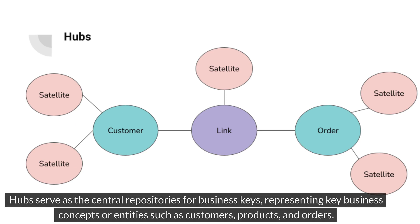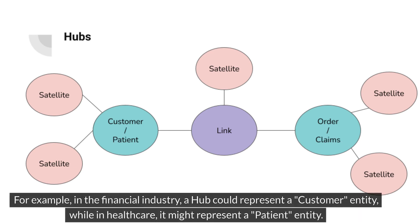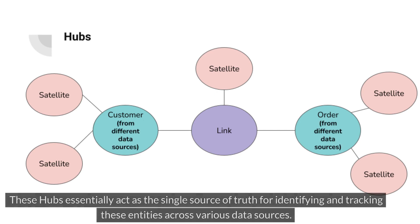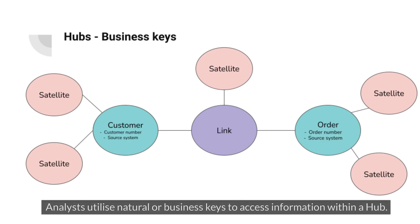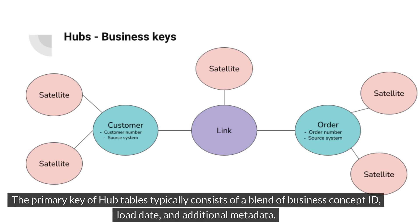Hubs serve as the central repositories for business keys, representing key business concepts or entities such as customers, products, and orders. For example, in the financial industry, a hub could represent a customer entity, while in healthcare, it might represent a patient entity. These hubs essentially act as the single source of truth for identifying and tracking these entities across various data sources. Analysts utilize natural or business keys to access information within a hub. The primary key of hub tables typically consists of a blend of business concept ID, load date, and additional metadata.